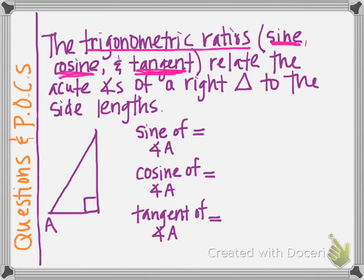In our example, we will be looking at these three ratios with respect to angle A. There are three basic side names with respect to where that angle is. Across from that angle is the other leg, which we call the opposite leg because it is opposite that angle. The leg that touches that angle — the other leg — is called the adjacent leg, abbreviated ADJ. Adjacent means touching. And then the hypotenuse, of course, is across from the right angle. The hypotenuse is always going to be the same regardless of which acute angle you're looking at.